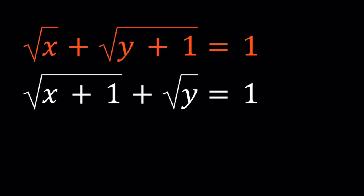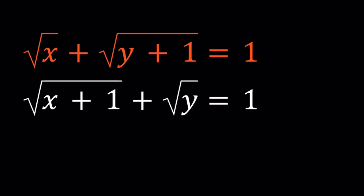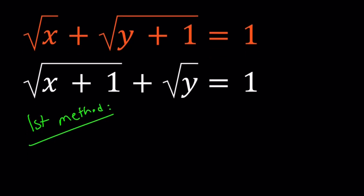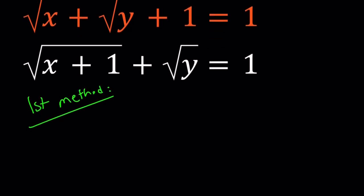We're also going to be looking at the graph of a function, which is going to give us some good ideas. Let's start with the first method. For my first method, I'm going to do the obvious — I'll square both sides.